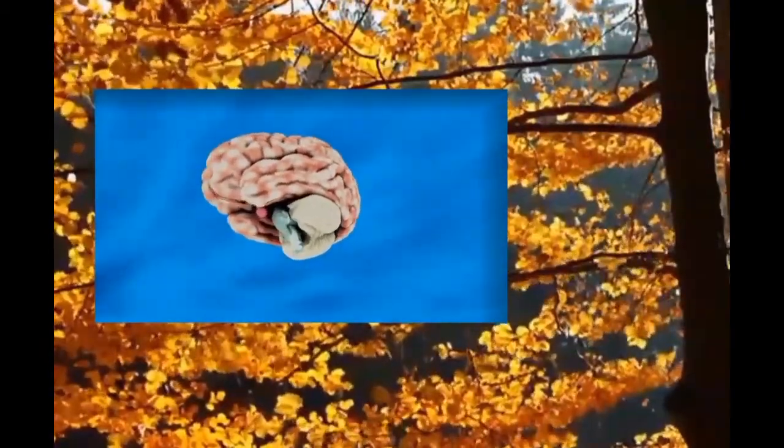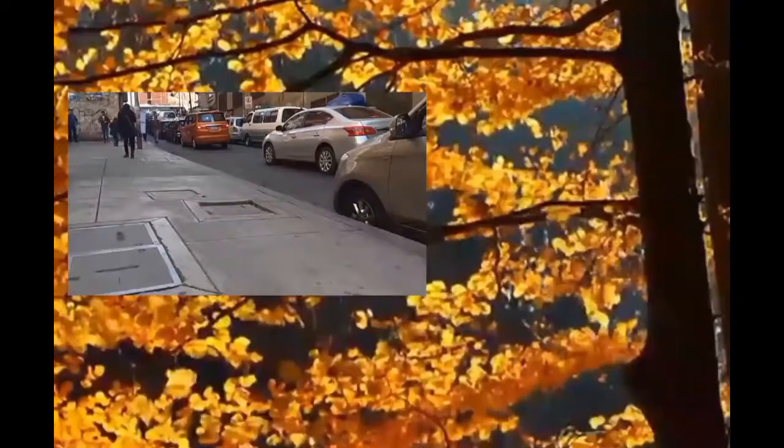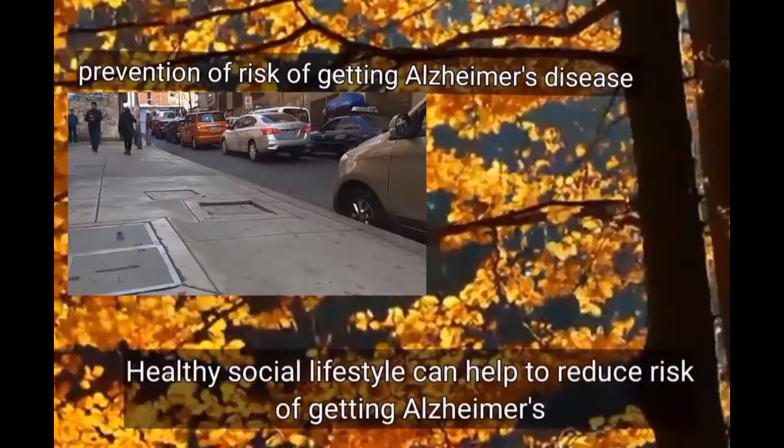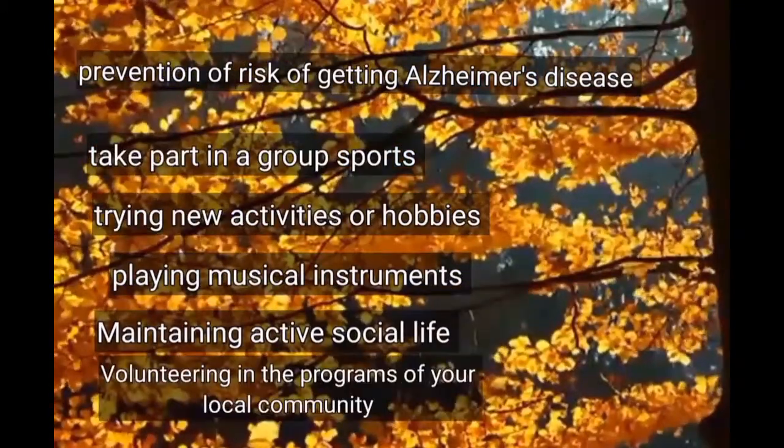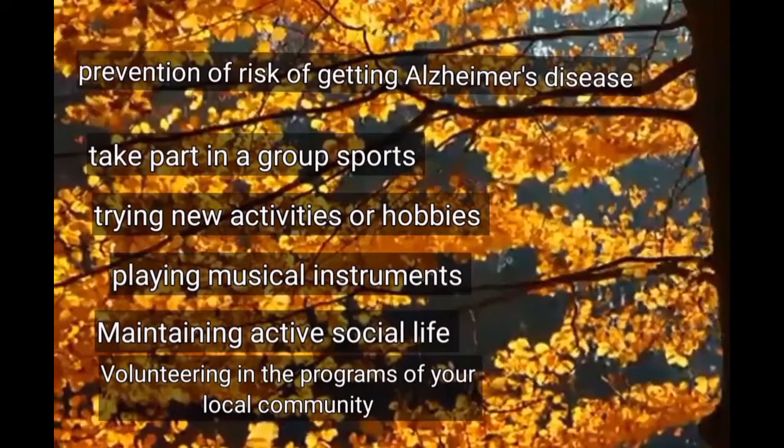As the exact cause of Alzheimer's is still unknown, there is no certain way to prevent it, but a healthy social lifestyle can help reduce the risk. Risk factors include untreated hearing loss, depression, loneliness, and social isolation. Preventive measures include taking part in group sports, trying new hobbies, playing a musical instrument, maintaining an active social life, volunteering in the local community, and following a strict diet and taking medicines on time if you have cardiovascular disease.